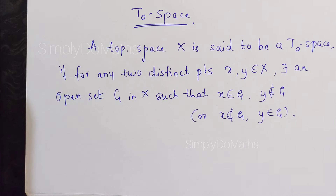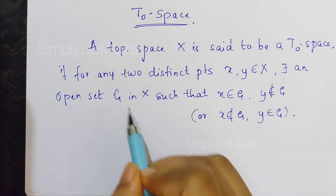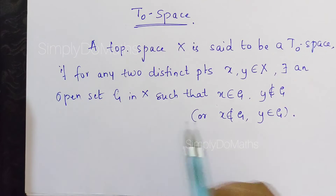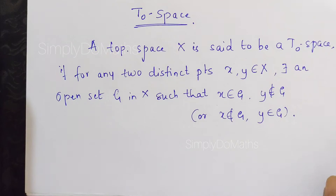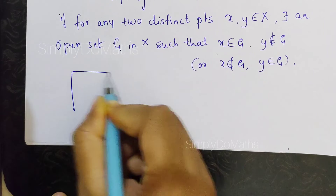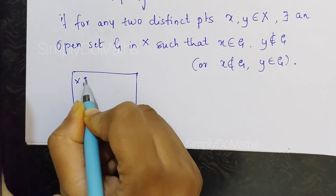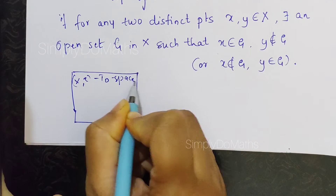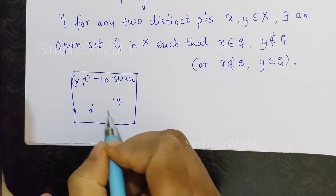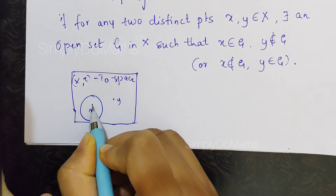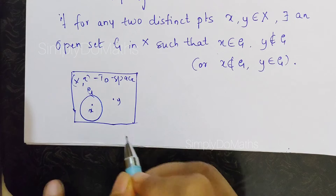We need to consider two points X and Y which are different, and an open set G — open set means an element of tau — such that among those two points, one should be in the set and the other should not. That is the definition of T0 space. Diagrammatically, for any two points X and Y, there is one open set G that contains X but Y does not belong to G.